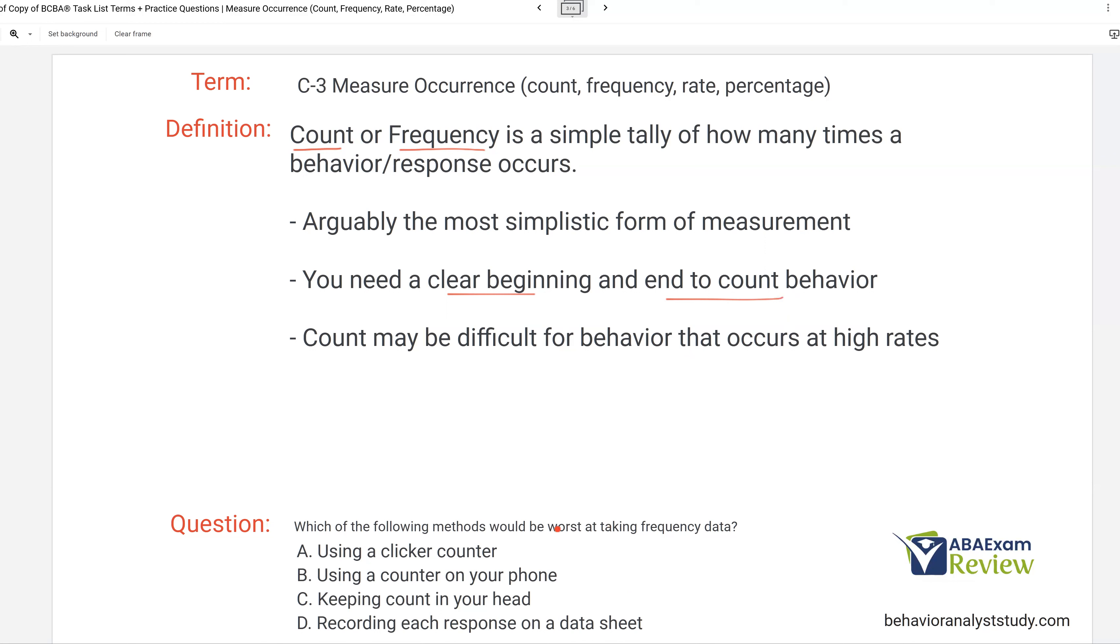So question, which of the following methods will be worst at taking frequency data? So what are we trying to accomplish with frequency data? We're counting something, and so we're looking for the method that's going to be the worst at counting. A, using a clicker counter. Well, a clicker counter is going to be great at counting. You can just keep it in your hand and click it each time behavior occurs.